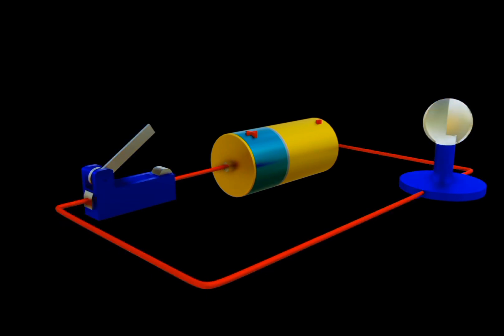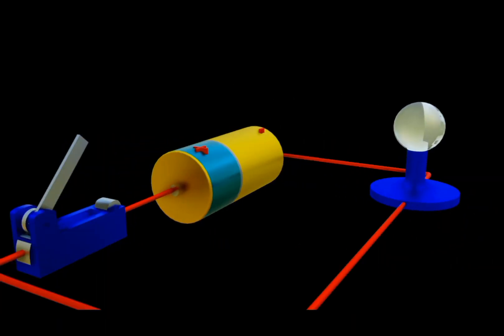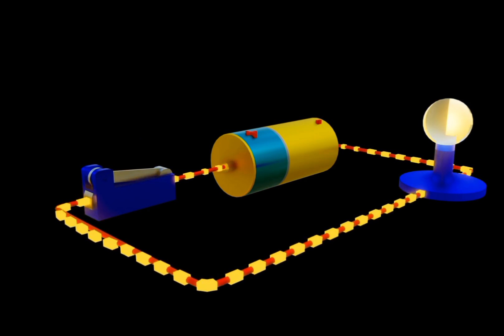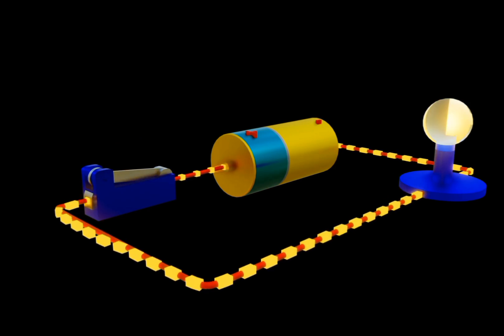This is because in this circuit, the battery provides the voltage to the circuit, which pushes current flow through the wires as shown, from positive to negative.